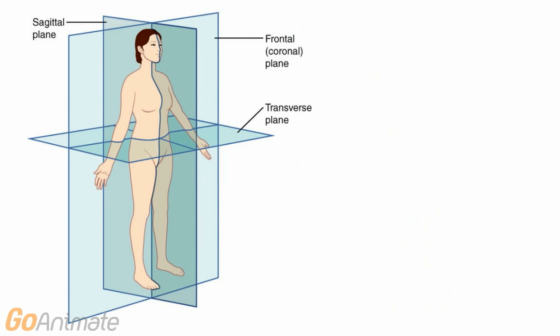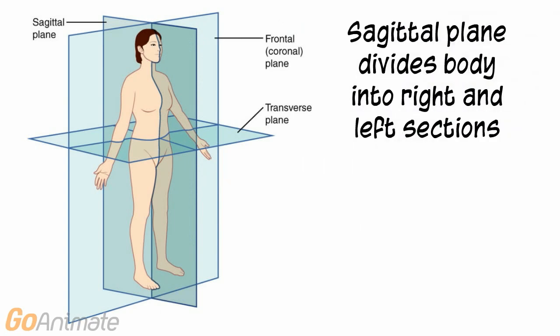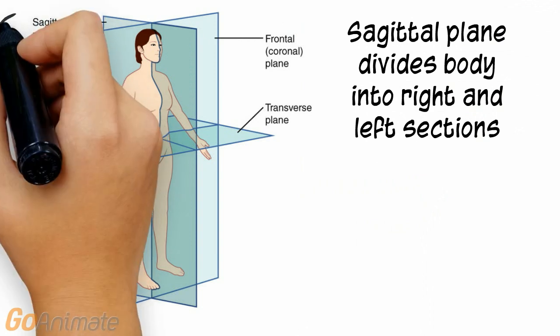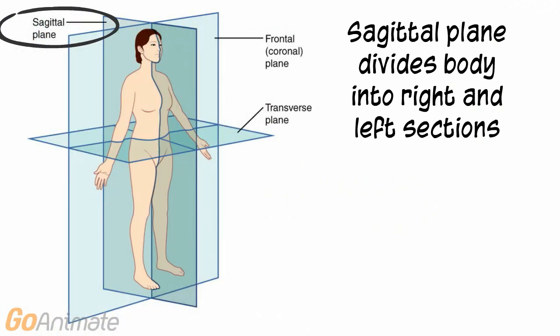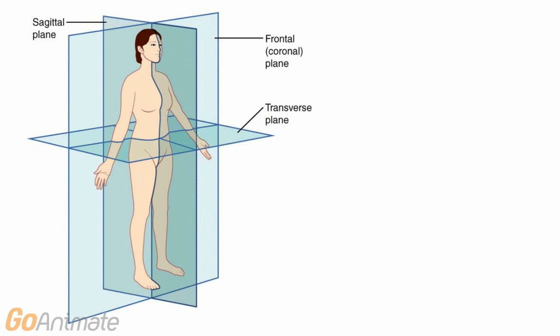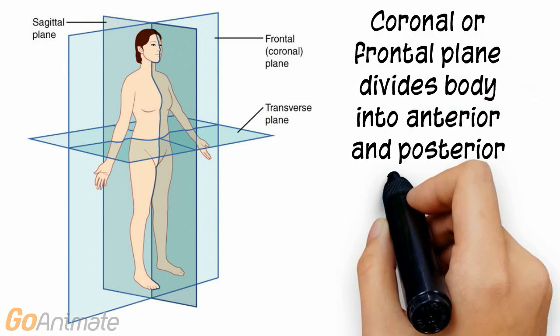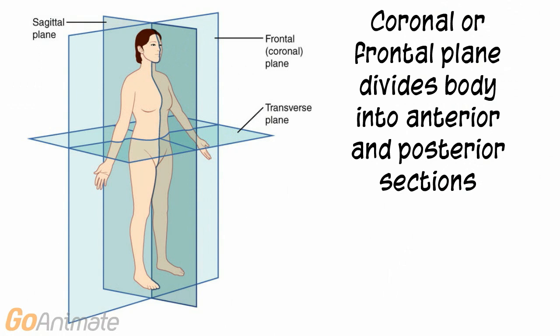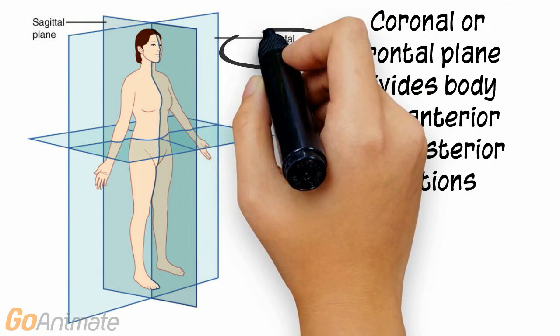We can use anatomical planes to divide the body. The sagittal plane divides the body into right and left sections. The coronal or frontal plane divides the body into anterior and posterior sections.